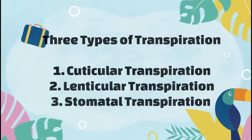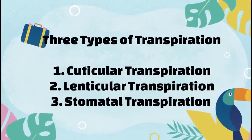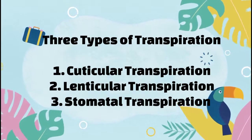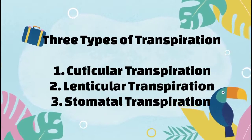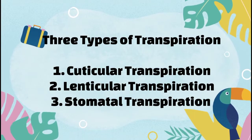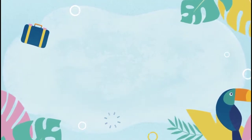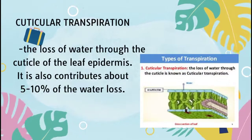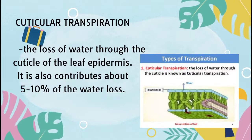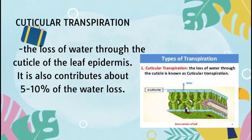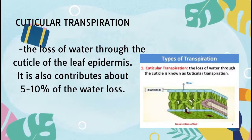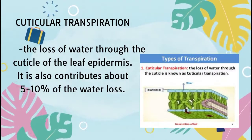We have three types of transpiration: cuticular transpiration, lenticular transpiration, and stomatal transpiration. Cuticular transpiration is the loss of water that takes place directly through the cuticle of the leaf epidermis. In some plants, this contributes about 5–10% of the water loss.